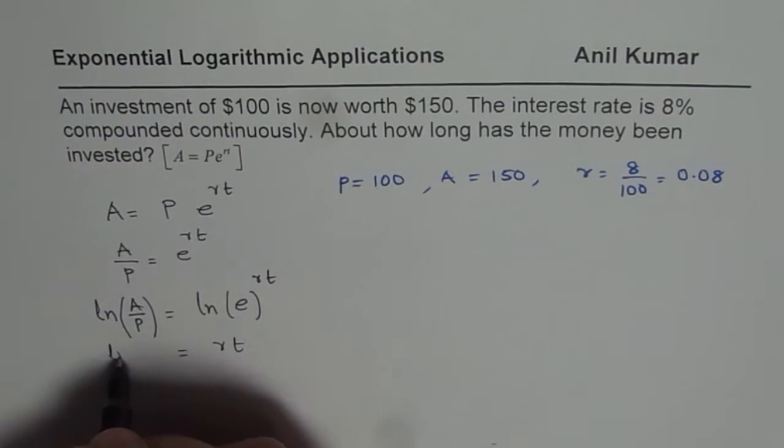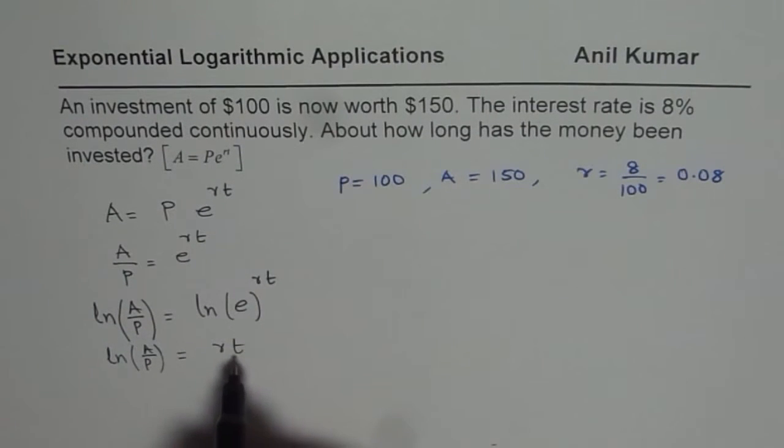So the right side becomes Rt. Do you see that? And we get ln A over P. And from here, you can find what T is by dividing ln A over P by R. So you get a formula here.